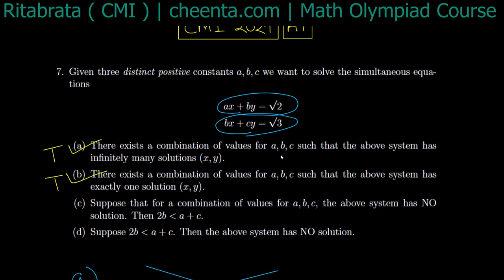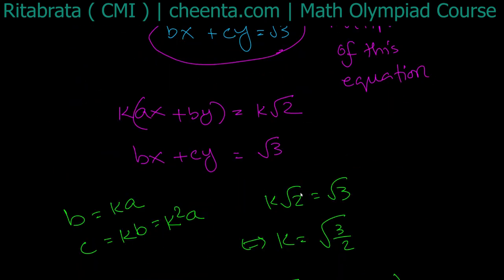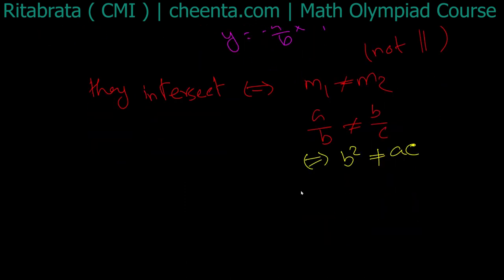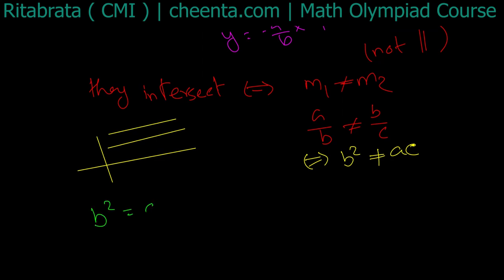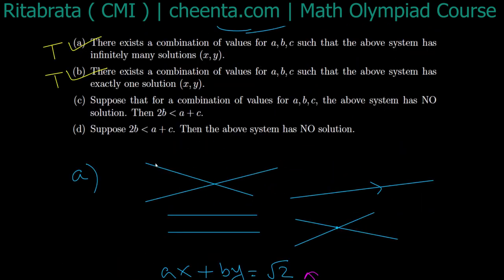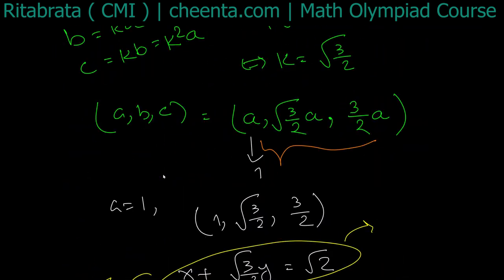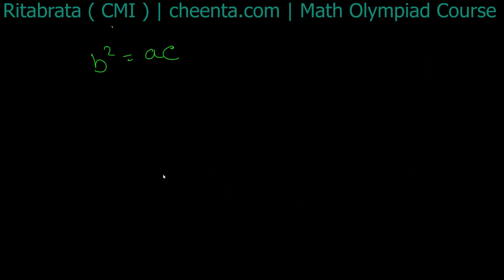For the third part: the system has no solution when the lines are parallel but not identical, which requires their slopes to be equal, so b squared equals ac. Now I have to determine whether 2b less than a plus c holds. This follows from the AM-GM inequality: since a, b, c are positive reals, we have (a plus c) over 2 is greater than or equal to root of ac, which equals b.